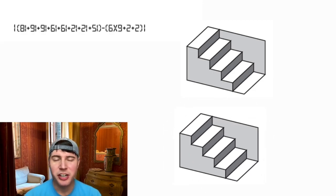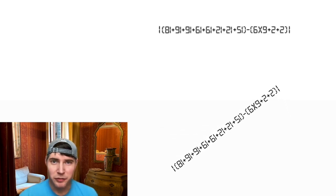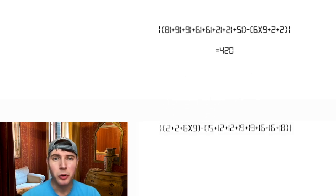Hey guys, you may have seen this optical illusion with the staircase that when it flips upside down makes the exact same staircase. I thought this was cool, so I wanted to make a mathematical expression just like this. So if you take this expression and flip it upside down, the top one equals 420 and the bottom one equals 69. I want to show you how I figured it out.